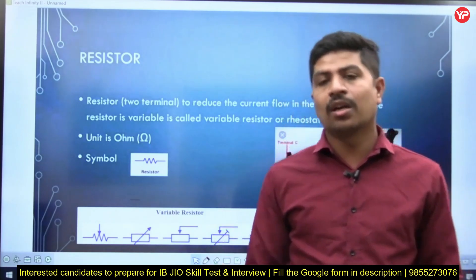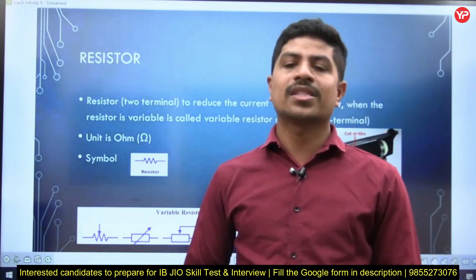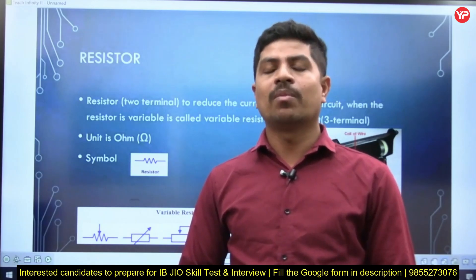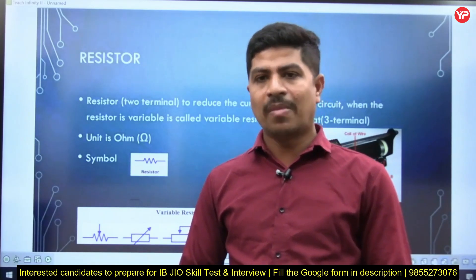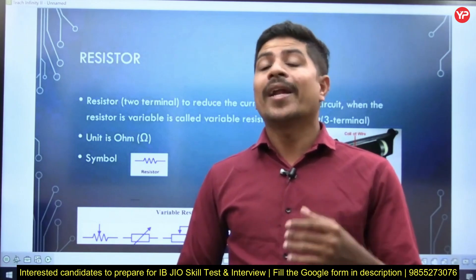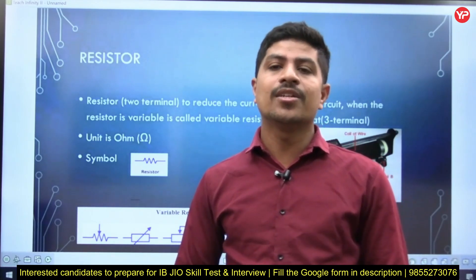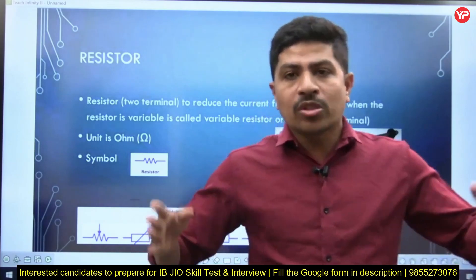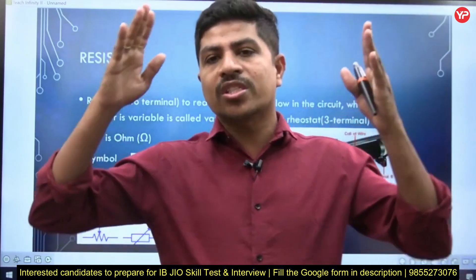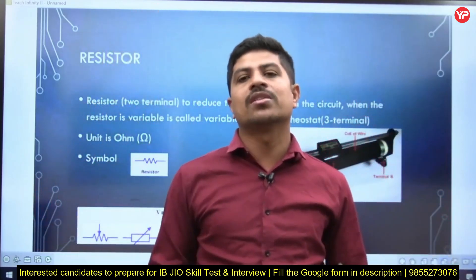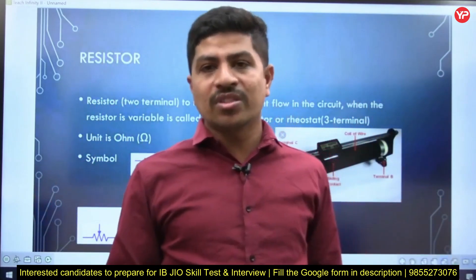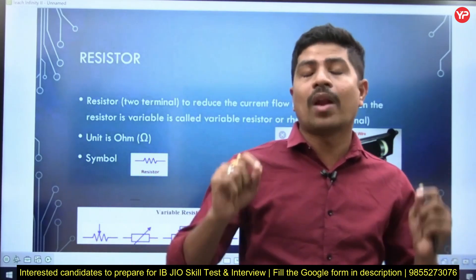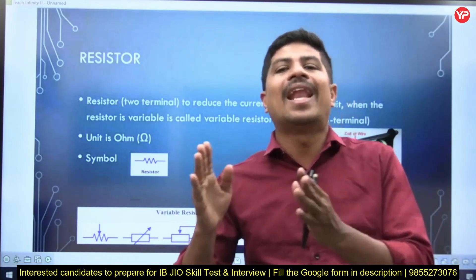The written test result has been announced. The next stage will be the skill test. In the skill test, whatever branch you are from — electrical, electronics, computer science, or IT — all of you might have done basic electrical engineering laboratory experiments in college. Most of the skill test tasks will be from those BEE lab experiments.